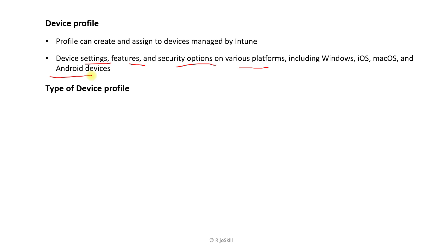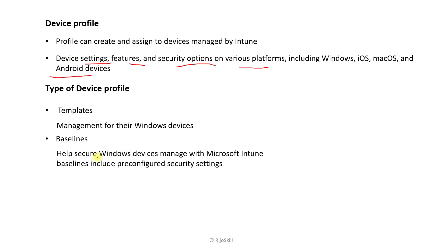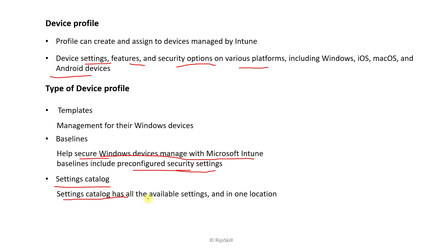Types of device profile available: Templates are used for managing Windows devices. Baseline profile helps with Windows device management in Microsoft Intune for security purposes — it provides pre-configured security settings. Settings Catalog holds all available settings in one location.